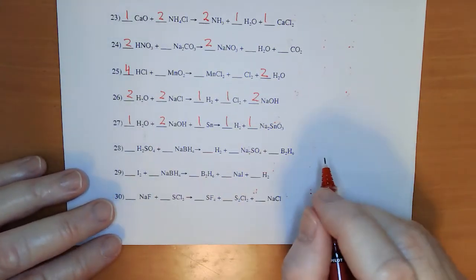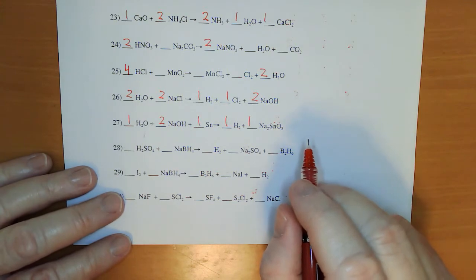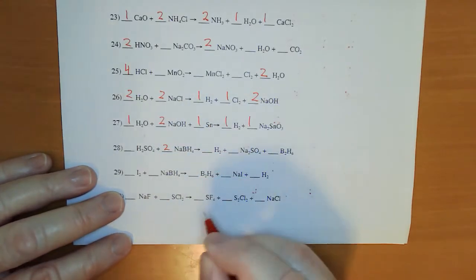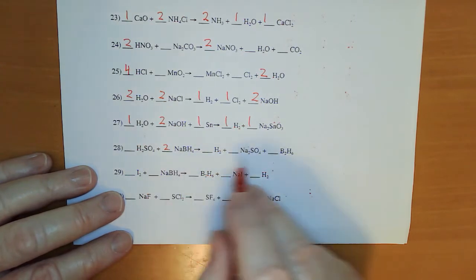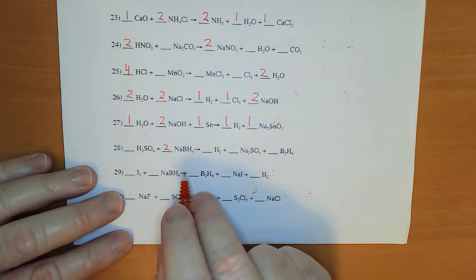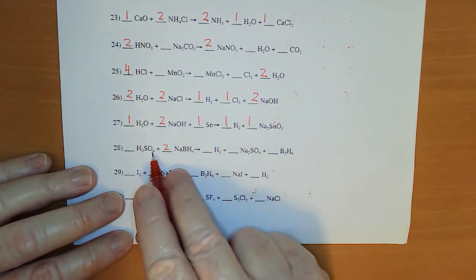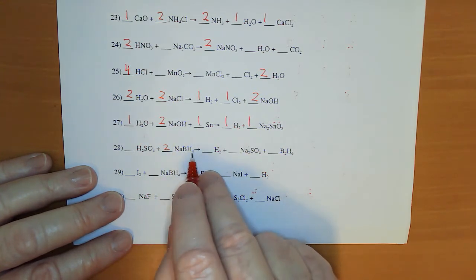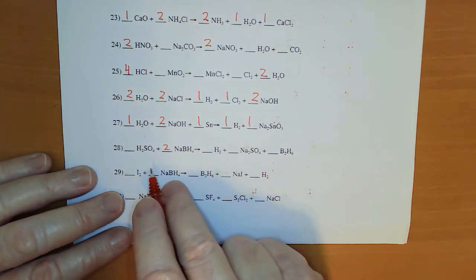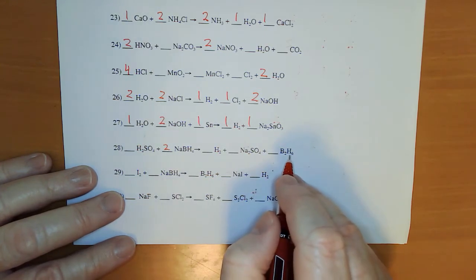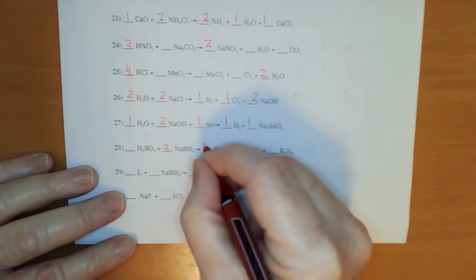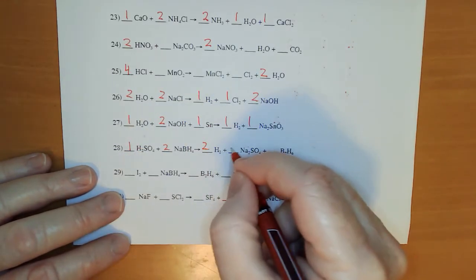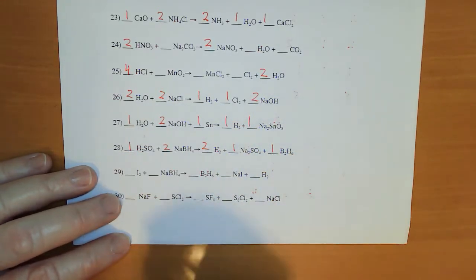Now in my next one — getting a little more complicated. The sodiums caught my attention: two of them, so I'm going to put a 2 there. 2 borons, I've got 2 borons. I've got a sulfate and I've got a sulfate. Hydrogens: 2 times 4 is 8, plus 2 is 10. I've got 6 there and 2 there — if I put a 2 there, that'll work out. Then I can fill in some 1s here, here, and here.